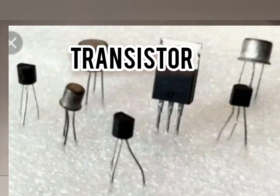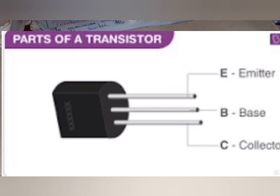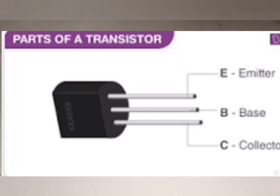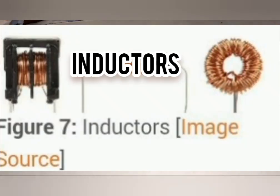Now transistors — I know you are getting used to them, and there are their pictures. A transistor has three main parts, as you can see. Their main function is to amplify current or to act as a switching device — so amplifying current and switching functions.